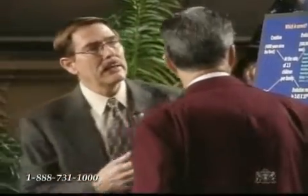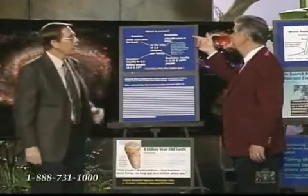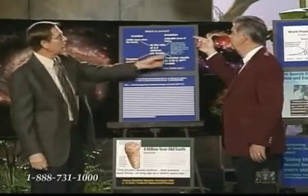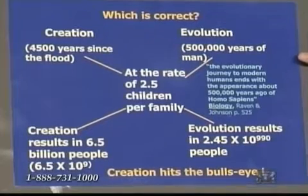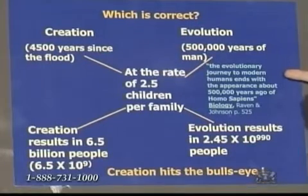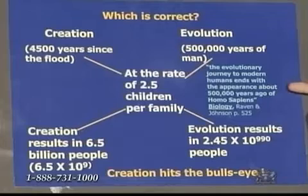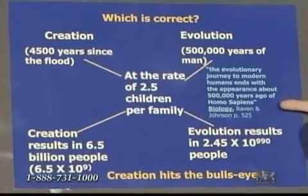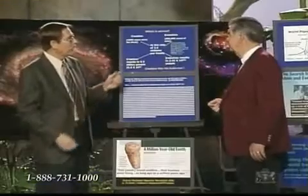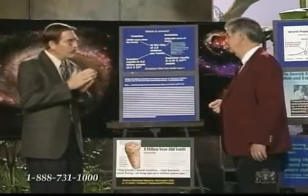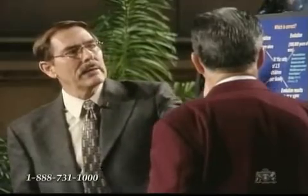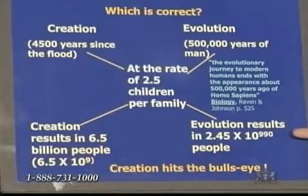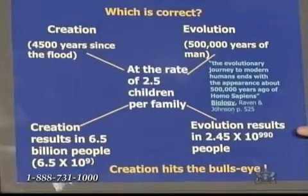On the other hand, the evolutionists claim that man's been around — homo sapiens. Here's a well-respected biology book, Raven and Johnson, page 525, which says the evolutionary journey to modern humans ends with the appearance about 500,000 years ago of homo sapiens. Whether that was our very closest relative or whether that was us, there's got to be growth from that point. And 500,000 years at the same rate would yield 2.45 times 10 to the 990th power.